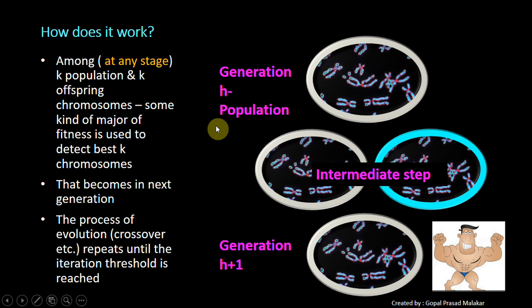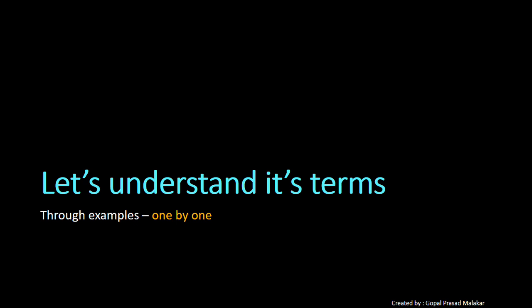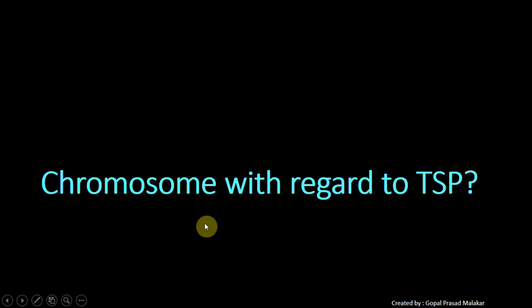To understand it better, let's understand through an example. We are going to discuss this one by one. Let's first start with chromosome. What is a chromosome with respect to travelling salesman problem? Chromosome is an individual solution.